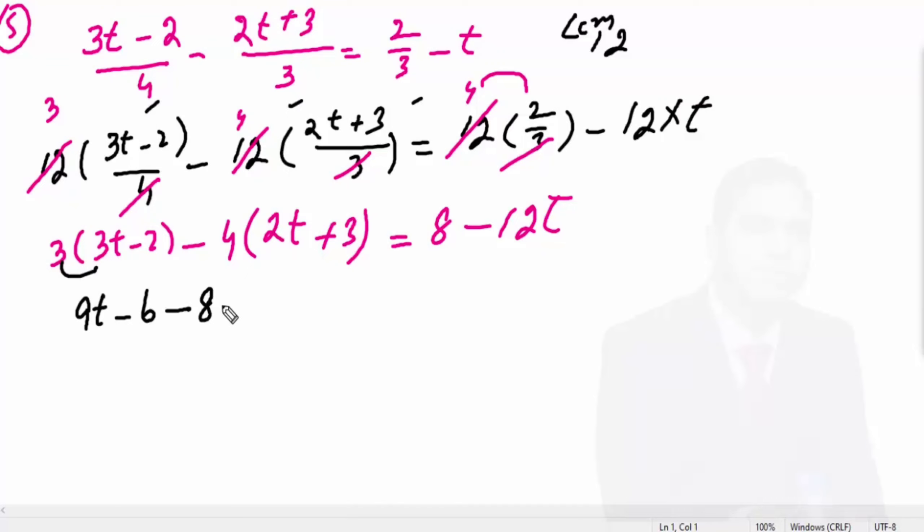4 times 2t is 8t, here it becomes minus. And this is plus, so minus 12. This gives us 8 minus 12t. Clear?